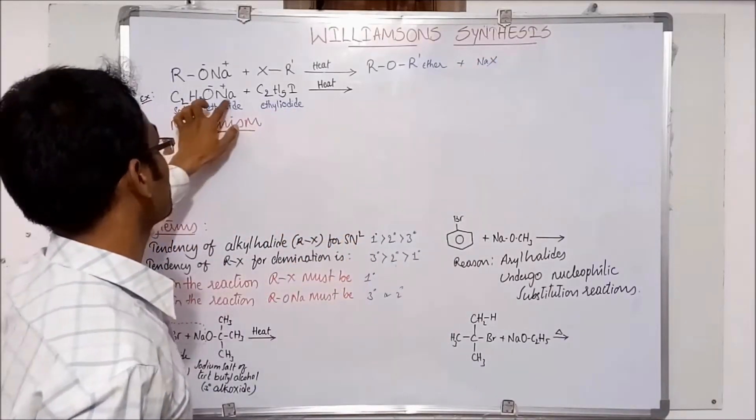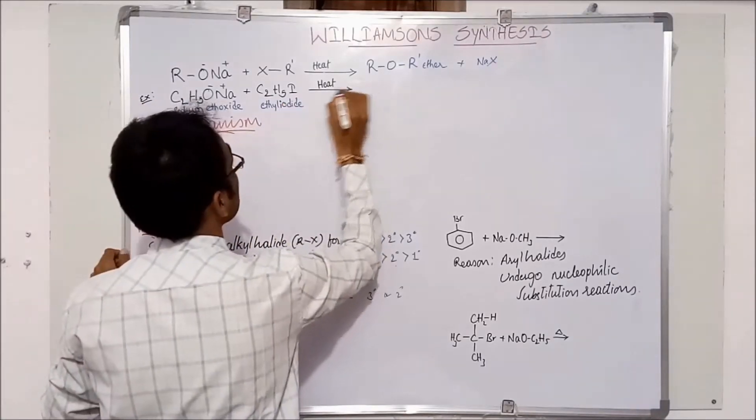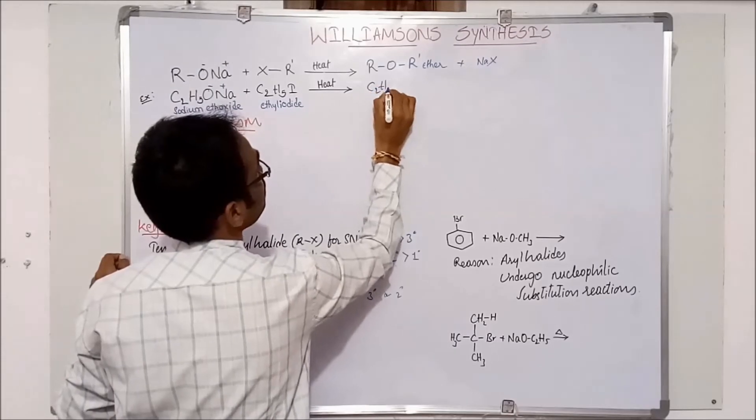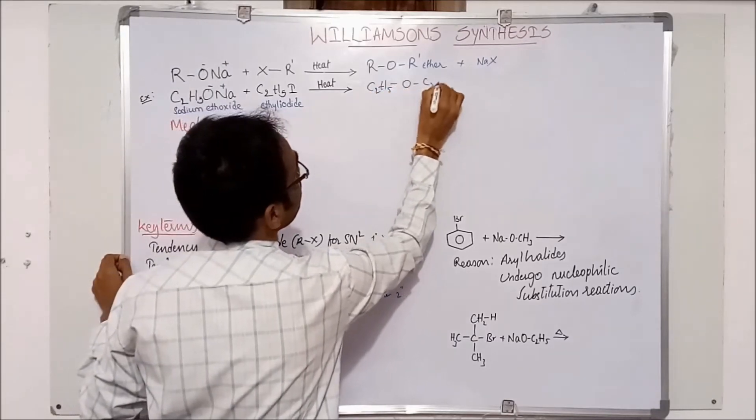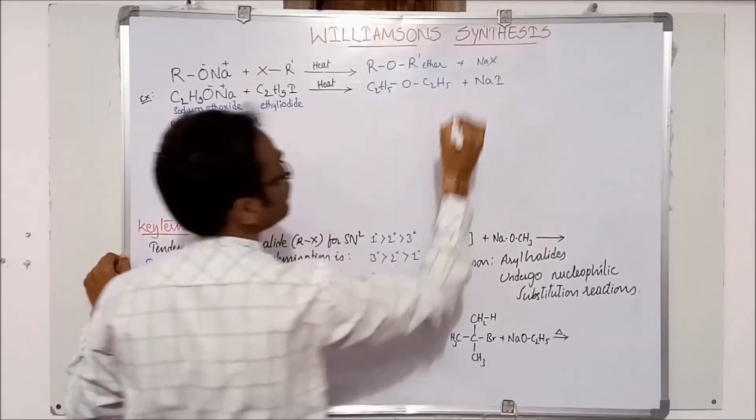Let us take the example of sodium ethoxide and ethyl iodide. We get diethyl ether and sodium iodide as by-product.